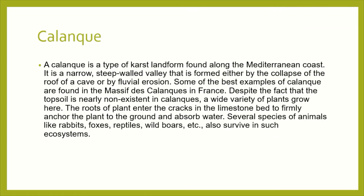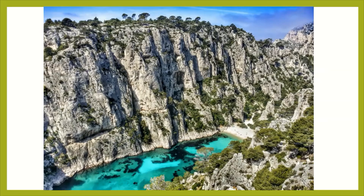Now we are going to learn about another karst feature — calanque. It is a type of karst landform found along the Mediterranean coast. It is a narrow and steep-walled valley that is formed from either the collapse of the roof of a cave or by fluvial erosion. Topsoil is usually non-existent in this type of karst feature, but a wide variety of plants grow here.